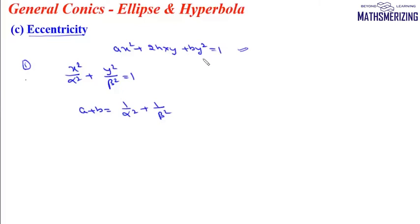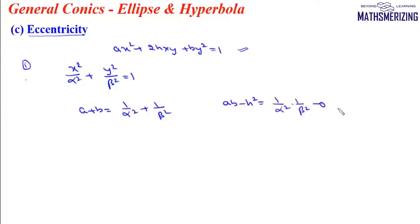So ab - h² equals a'b', which in this case is 1/α² · 1/β², and there is no h' term so it is 0. So those are our first and second invariant equations.